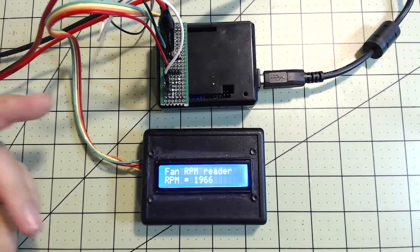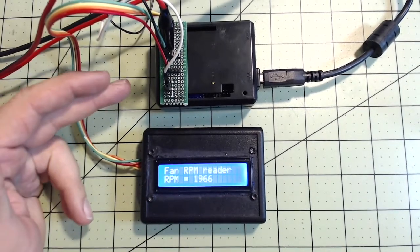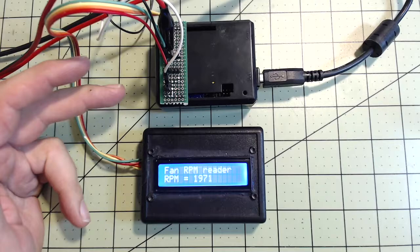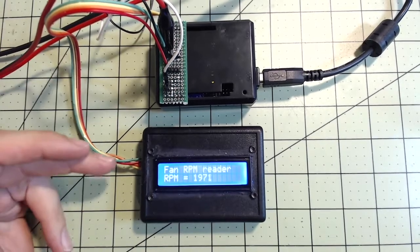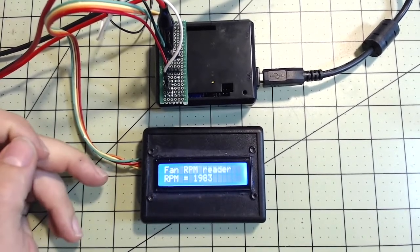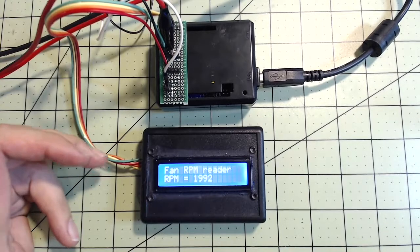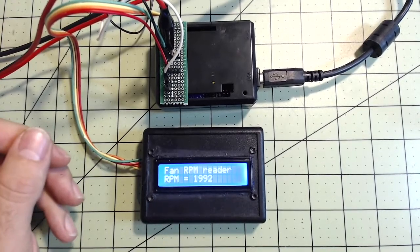So what this circuit will basically do is take that information, process it through the microprocessor over here through the code, and then display it through I2C serial communication to the LCD display.